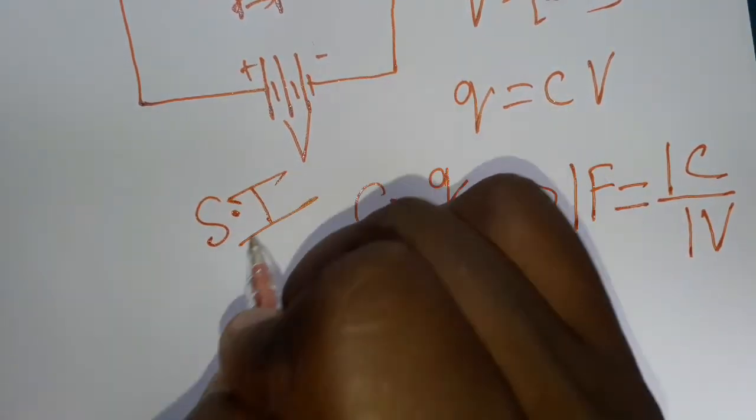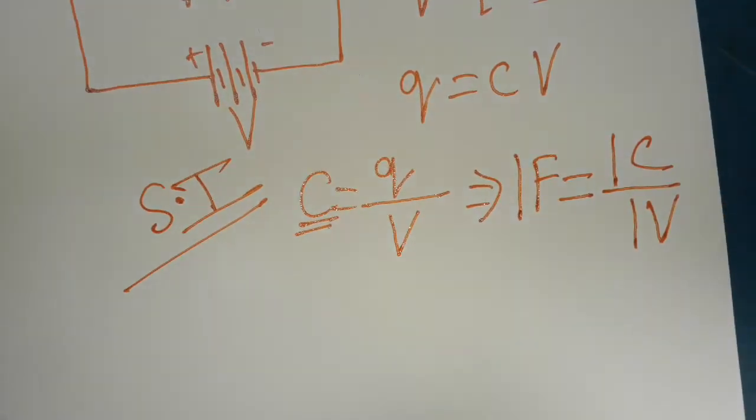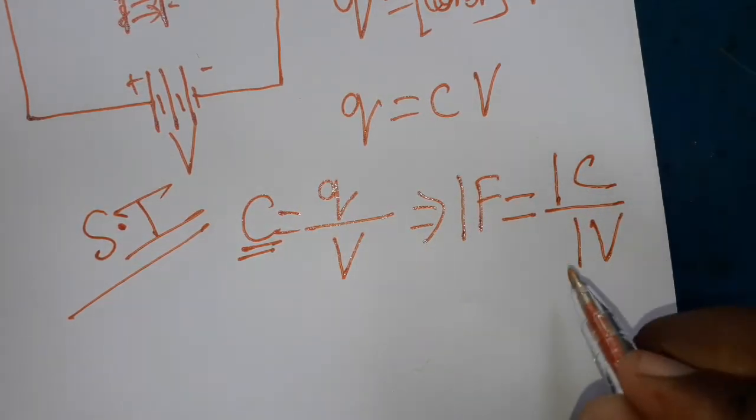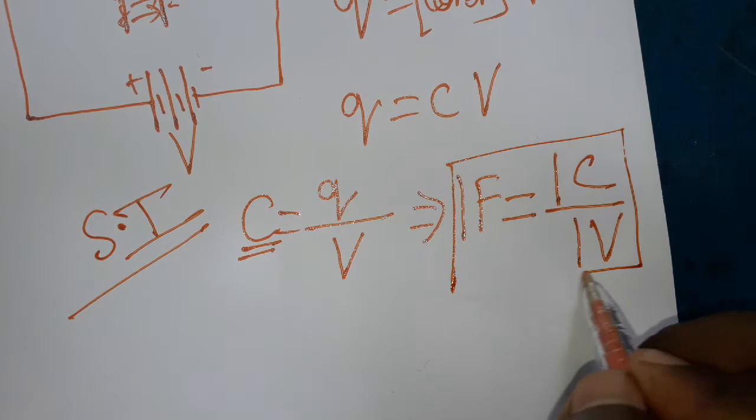Farad is the SI unit of capacitance of a capacitor. So one farad is one coulomb per volt. Thank you.